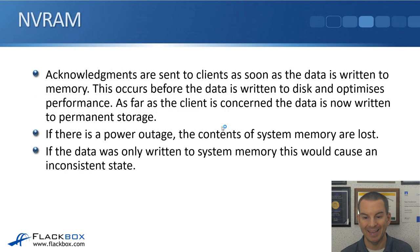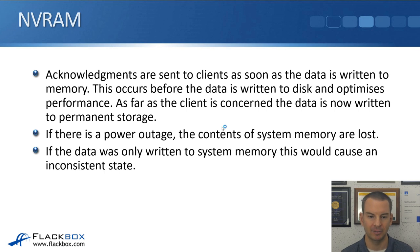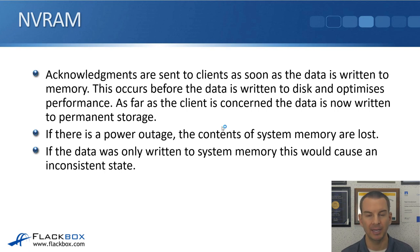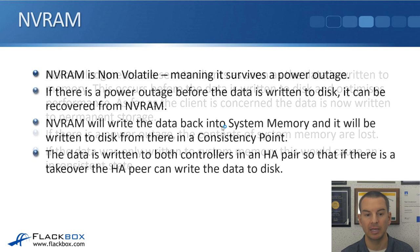Acknowledgements are sent to clients as soon as data is written to memory, before it's written to disk with a CP, which optimizes performance. As far as the client is concerned, the data is permanently stored at that point. However, if there's a power outage, the contents of system memory — which is DRAM — are lost. If data was only written to system memory, the client would think it's been written to permanent storage, but the data would actually be lost. That's why we need NVRAM.